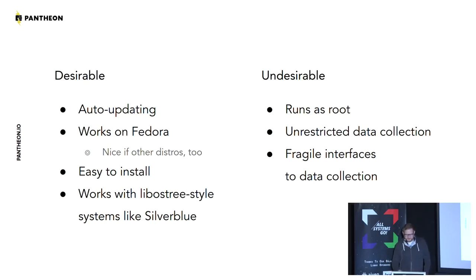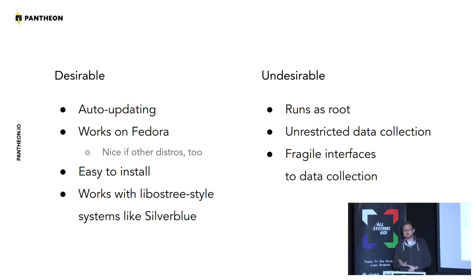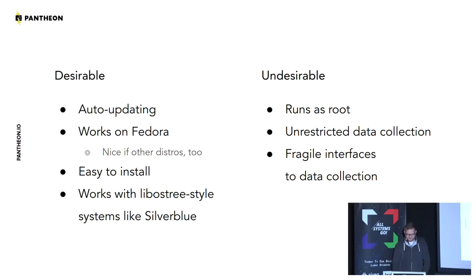In terms of what we're trying to accomplish: we want it to auto-update, run on Fedora boxes, and ideally run on other distros as well without doing a release specific to each distro — that's another reason Flatpak is interesting here. We want it easy to install, and I happen to be a Silverblue fan, so I wanted it to work well with that kind of system. Some monitoring tools do things like download files and write them out to /usr, which you just can't do on a system based on libostree.